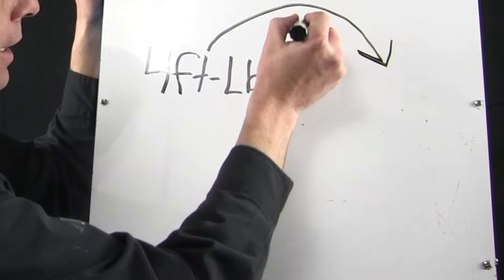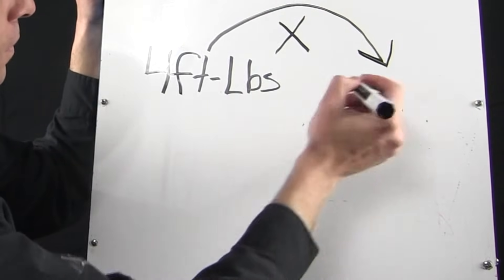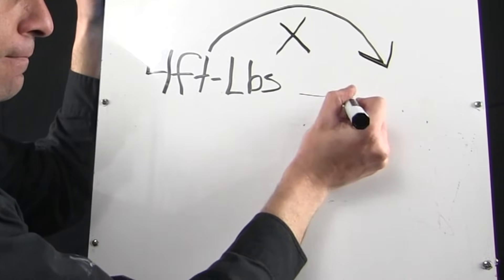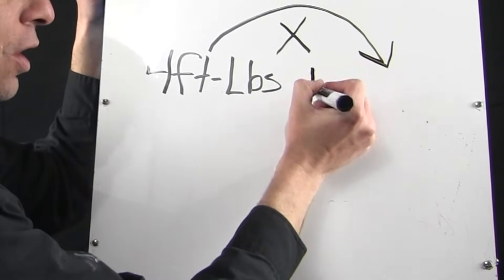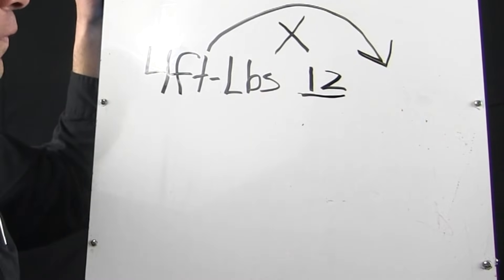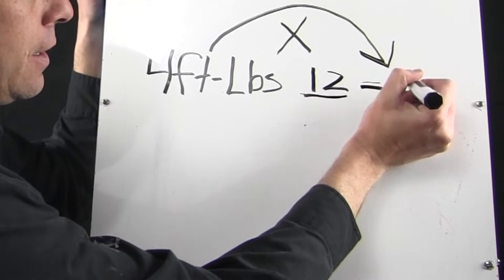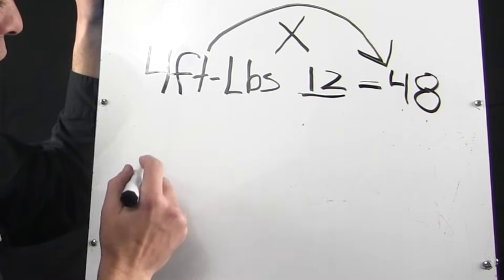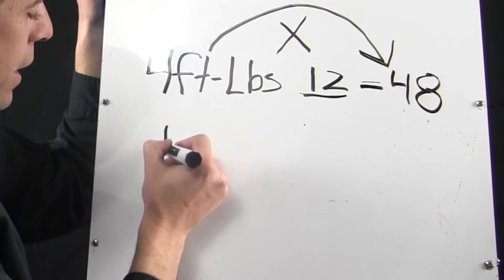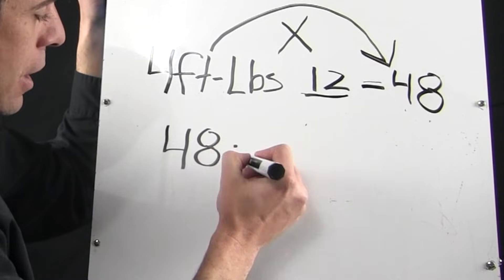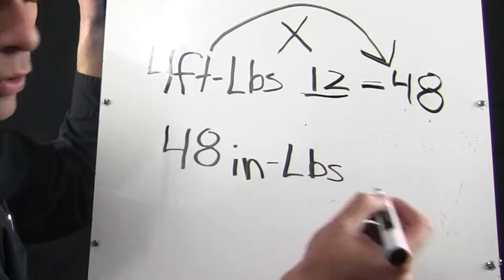We multiply. And what's our constant? Our constant is always 12. So 4 times 12 equals 48. We would have 48 inch-pounds of torque.